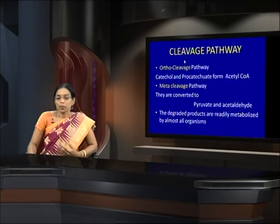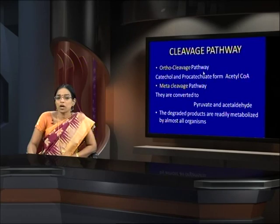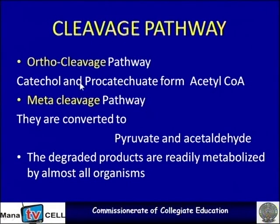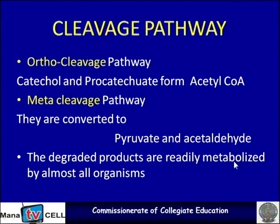The formation of catechol and procatechate requires cleavage pathways: one is the orthocleavage pathway and the other is the metacleavage pathway. After production of catechol and procatechuate, they are cleaved forming acetyl-CoA, which is again used in the Krebs cycle for aerobic respiration. In the metacleavage pathway, catechol and procatechuate are converted to pyruvate and acetaldehyde, which are useful in co-metabolic acid pathways.